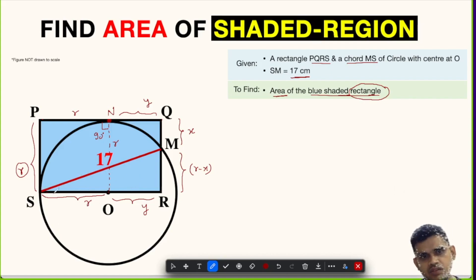So let us first focus on this triangle SRM. This is a right triangle, so we will use Pythagorean theorem here. So this will give us (R + Y)² + (R - X)² = 17². This is equation number 1.